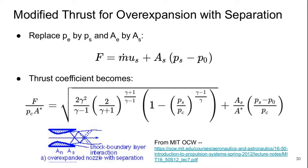So to deal with this case, we need to modify our thrust formula. Here's a modified thrust formula for overexpansion with separation. Basically, all we have to do is replace the exit pressure PE by the pressure at the shock location PS, and the exit area AE by the area at the shock location AS, and also the velocity with the velocity at the shock location.